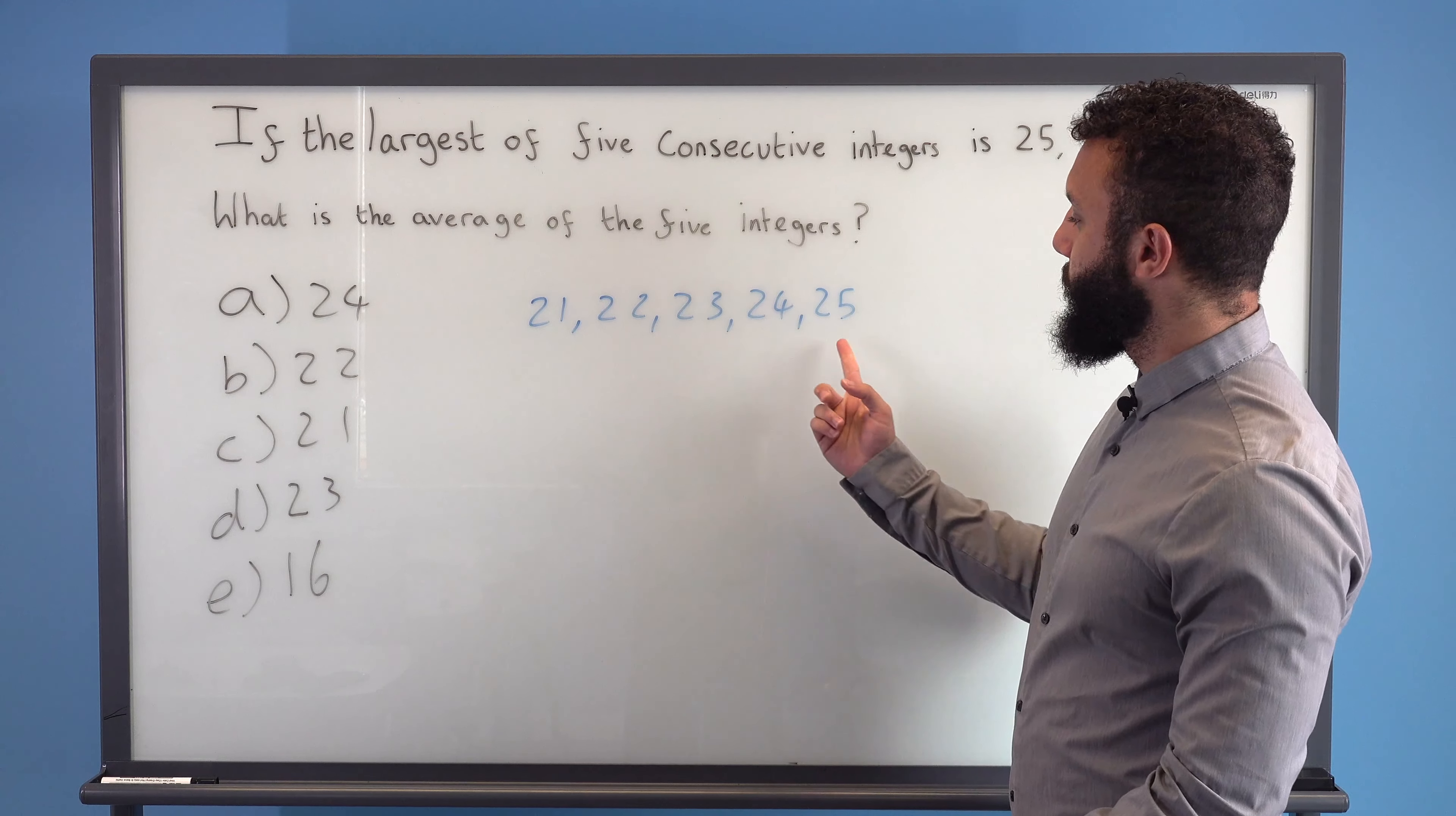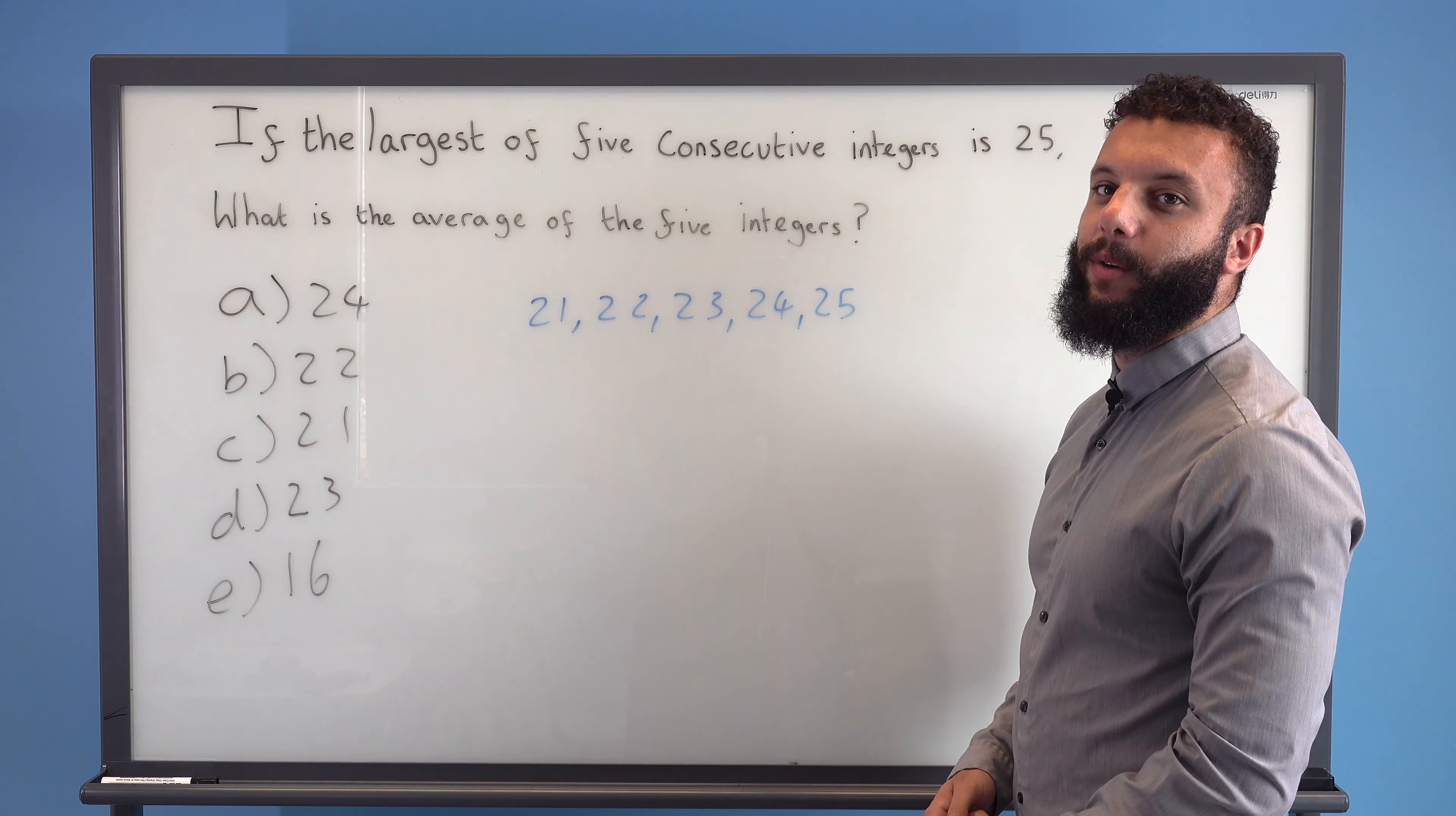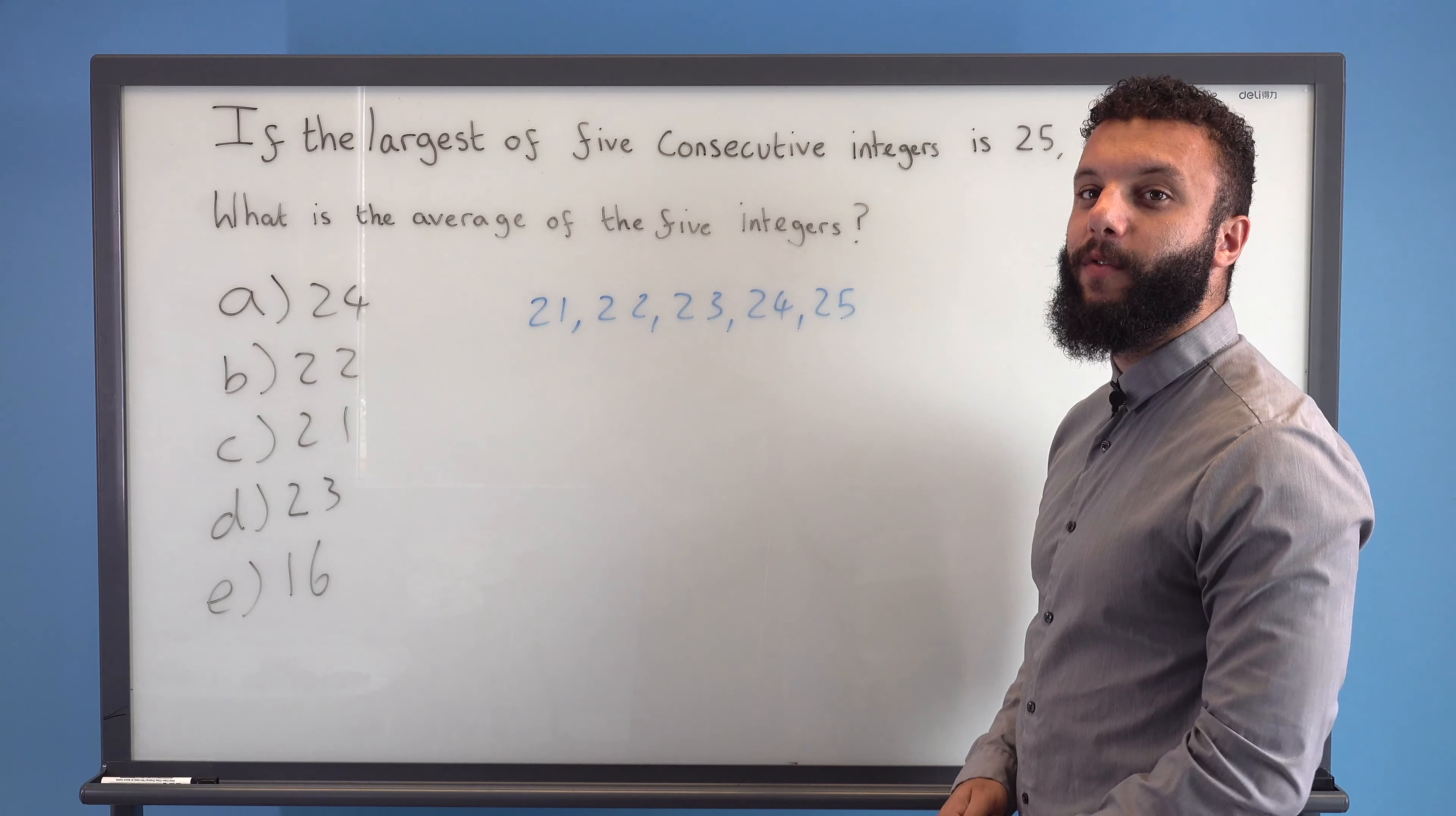We can notice that this one and this one are both equally distant from the middle, they're both two away. This one and this one are both equally distant from the middle as well, they're both one away.